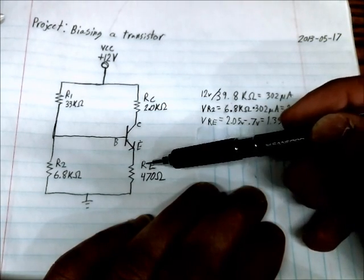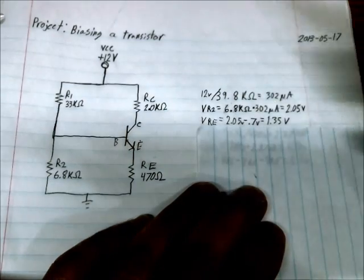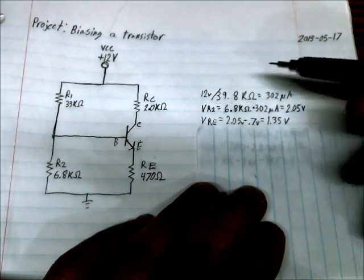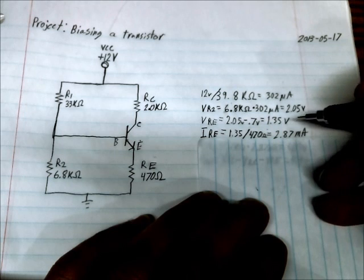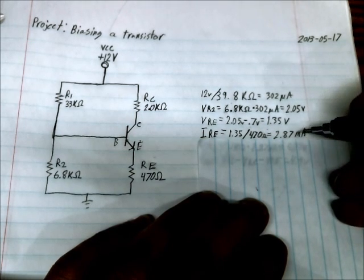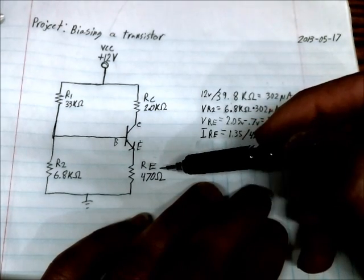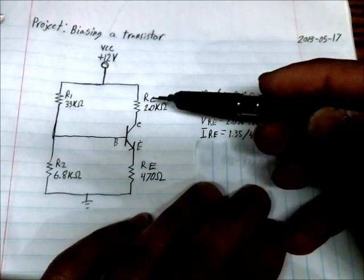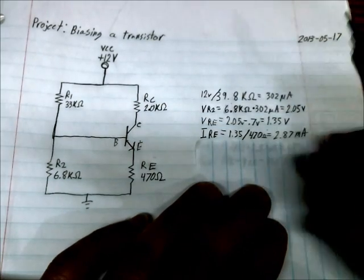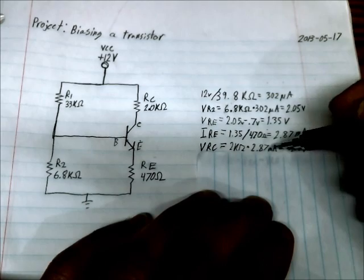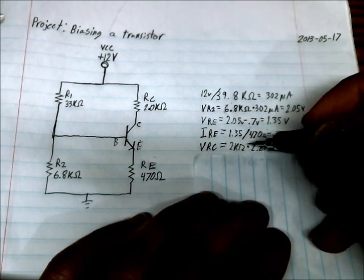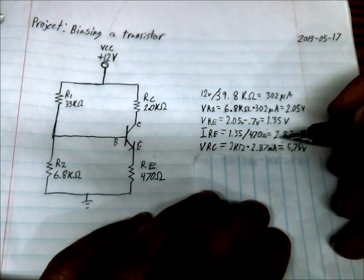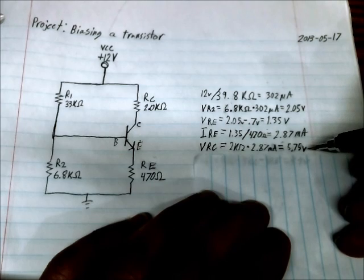So 1.35 divided by 470 ohms is equal to 2.87 milliamps. And the current running through RE is approximately the same as the current running through RC. So just assume that they're equal. So use that current to find the voltage through RC. 2 kiloohms times 2.87 milliamps is equal to 5.5 volts.